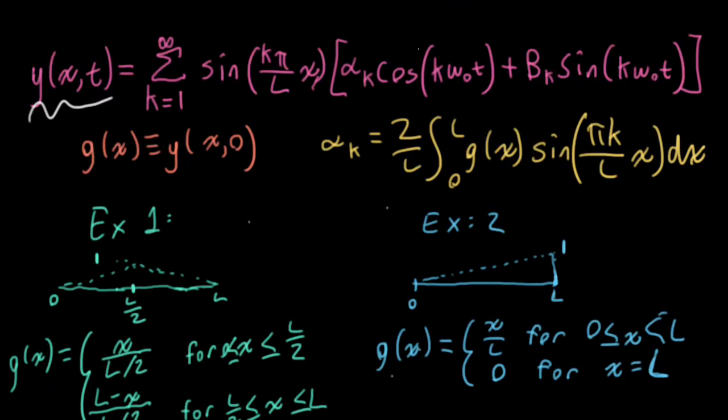All right, so with that out of the way, what we want to do today is to look at the initial conditions on velocity. So the initial conditions on position corresponds to plucking a string. Initial conditions on velocity correspond to striking the string.